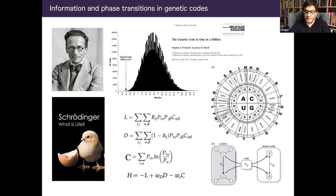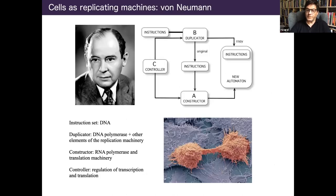Using information theory to examine what makes the code optimal - in terms of error load, diversity, and the cost of efficient decoding - there is a phase transition that defines the domain where all the properties seen in the genetic code are identified. This suggests that the phase transition is what's behind the evolutionary emergence of the code. Now let's go into cells - the units of life.